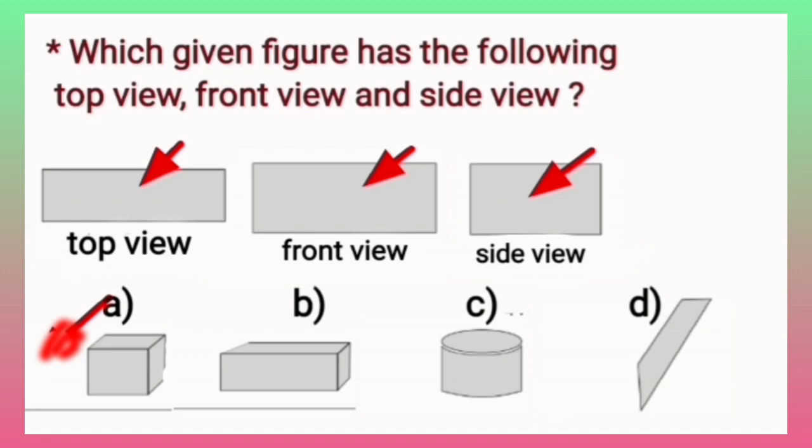In option A, we have a cube and all its faces are in square shape. Now option B, its faces are in yes rectangular shape. So this is the correct option. That's why we have put a tick here.